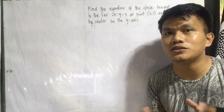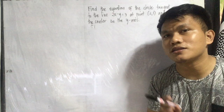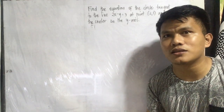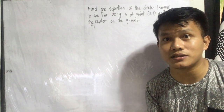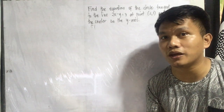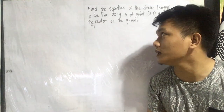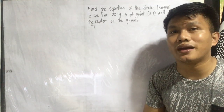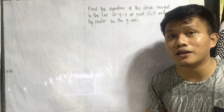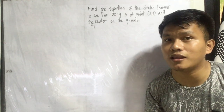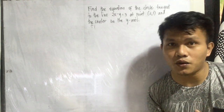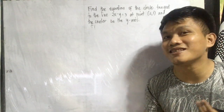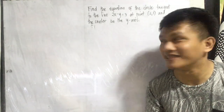Find the equation of the circle tangent to the line 2x minus y equals 3 at point (2, 1), and the center on the y-axis. The first thing that we have to do is to illustrate the given. After illustrating, that's the point wherein we conduct several processes or methods. In finding the equation of the circle, we have different methods, and as long as we arrive at the same answer, we can say that the answer is correct.